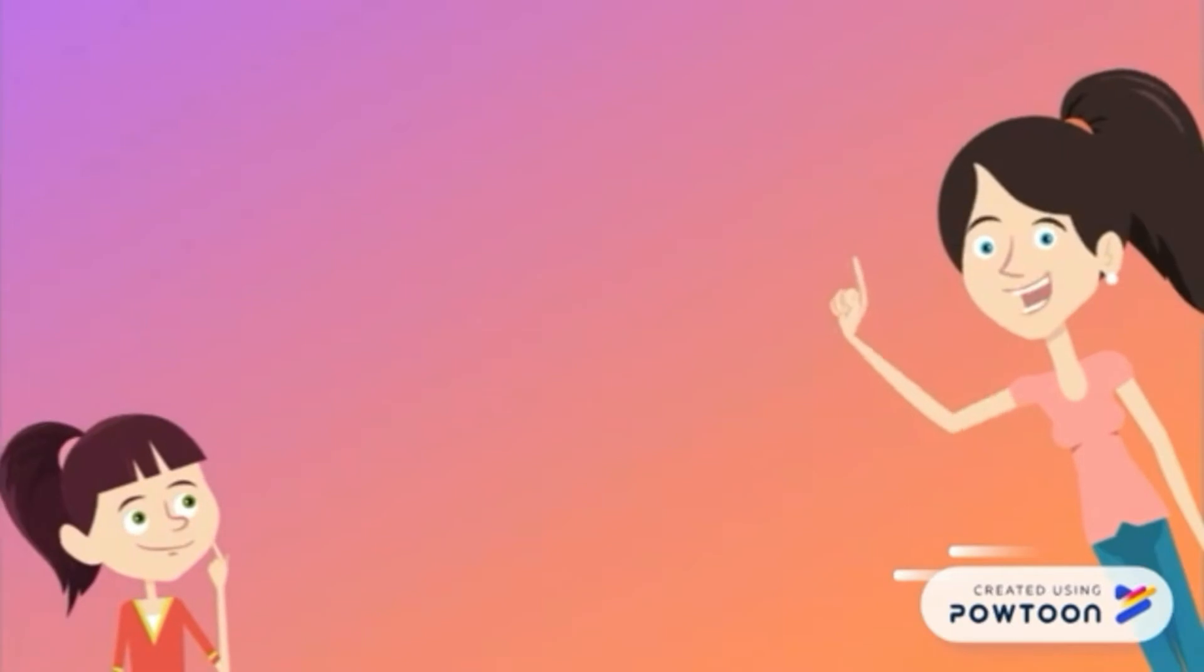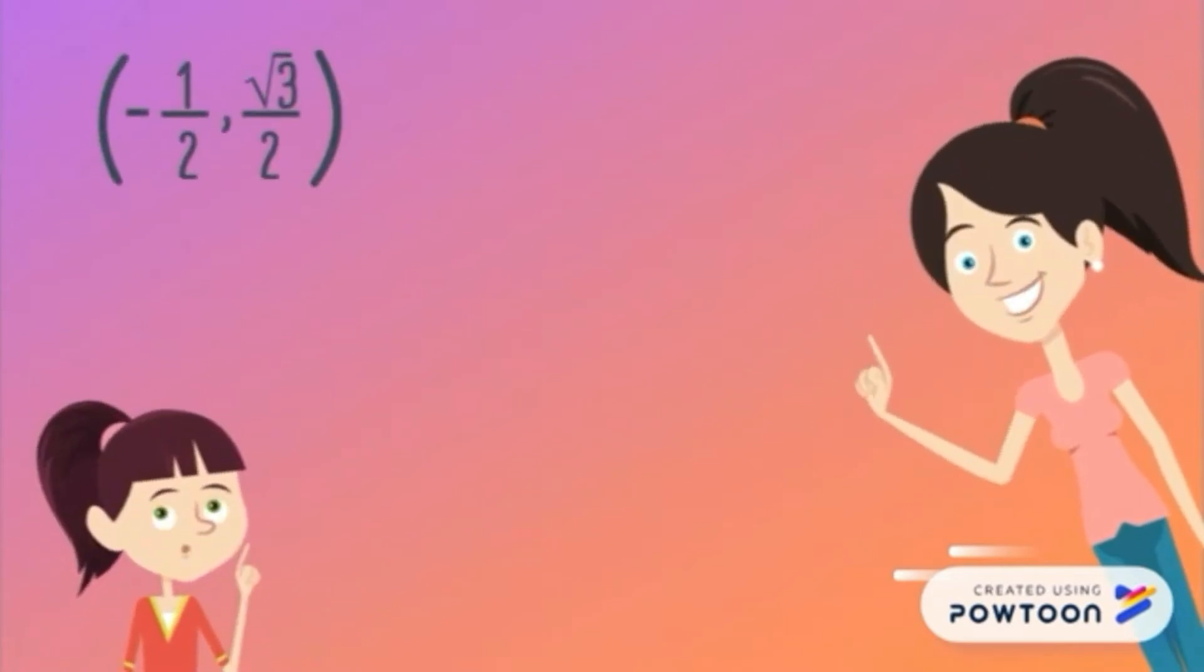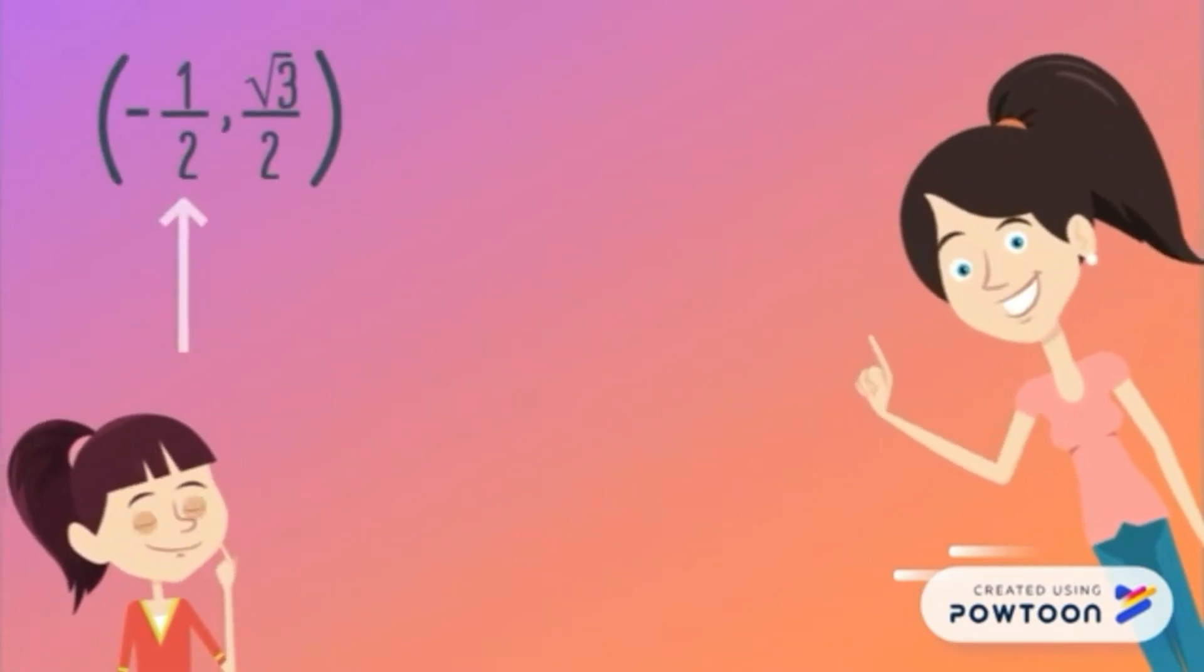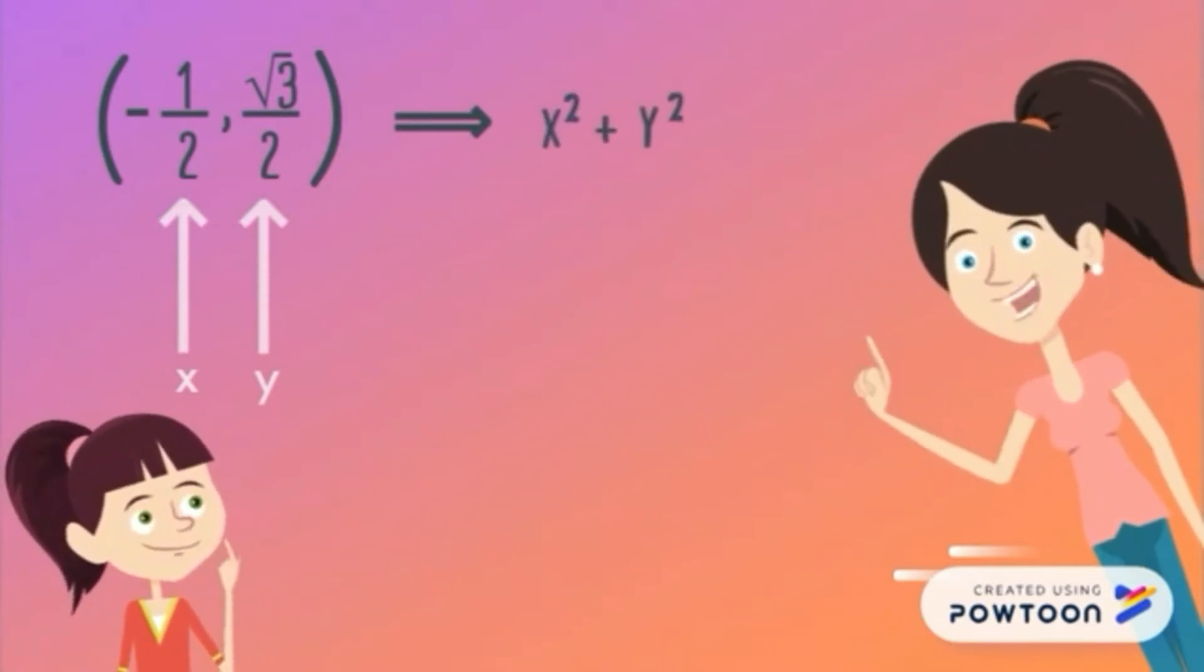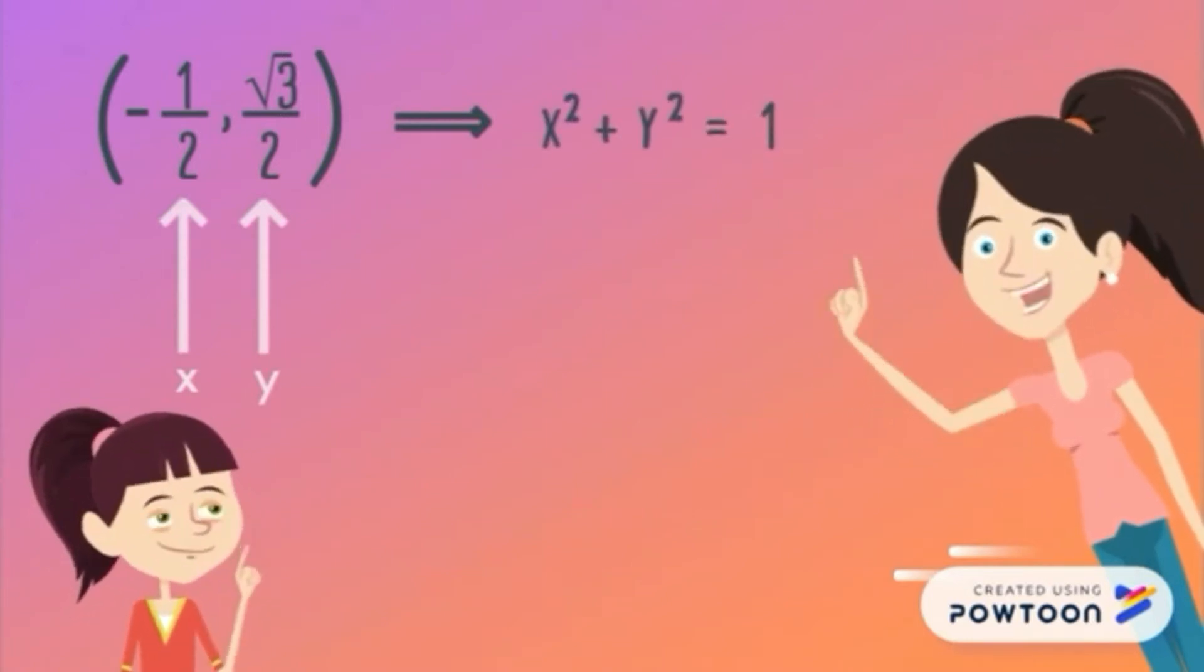Let's take this as an example. As we all know, negative 1 half is the x value. Using the equation x squared plus y squared equals 1, substitute negative 1 half to x and square root of 3 over 2 to y.